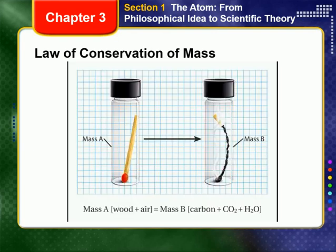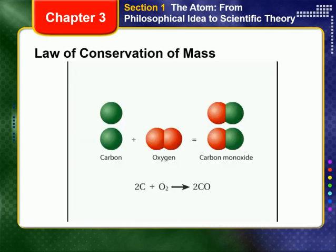In chemical reactions such as the combustion of this match inside a closed container, we find that the mass of the starting materials is the same as the mass of the ending materials. The law of conservation of mass explains why we represent chemical reactions as balanced chemical equations. The number of each atom on each side of the equation is conserved, representing that mass is conserved.